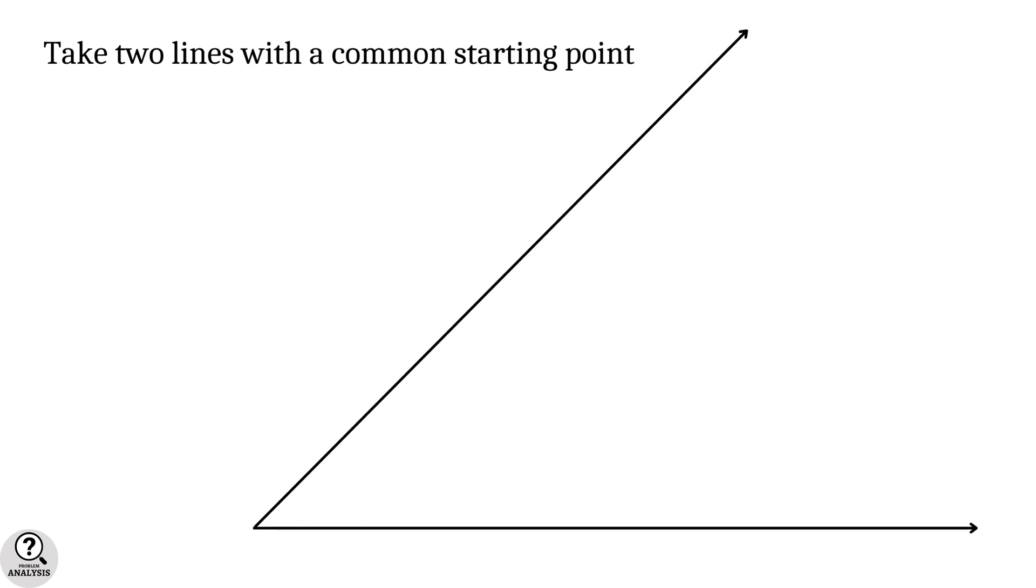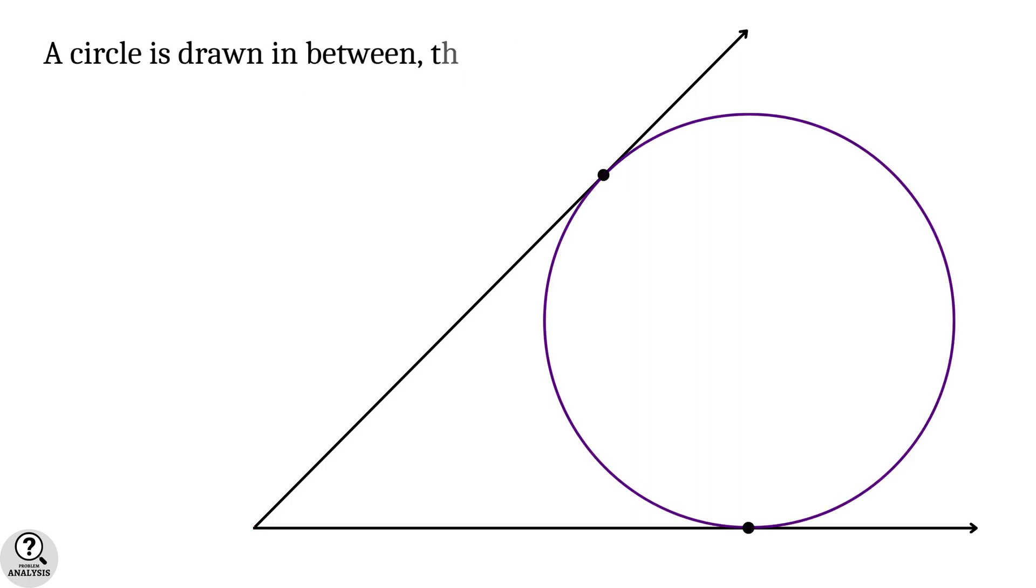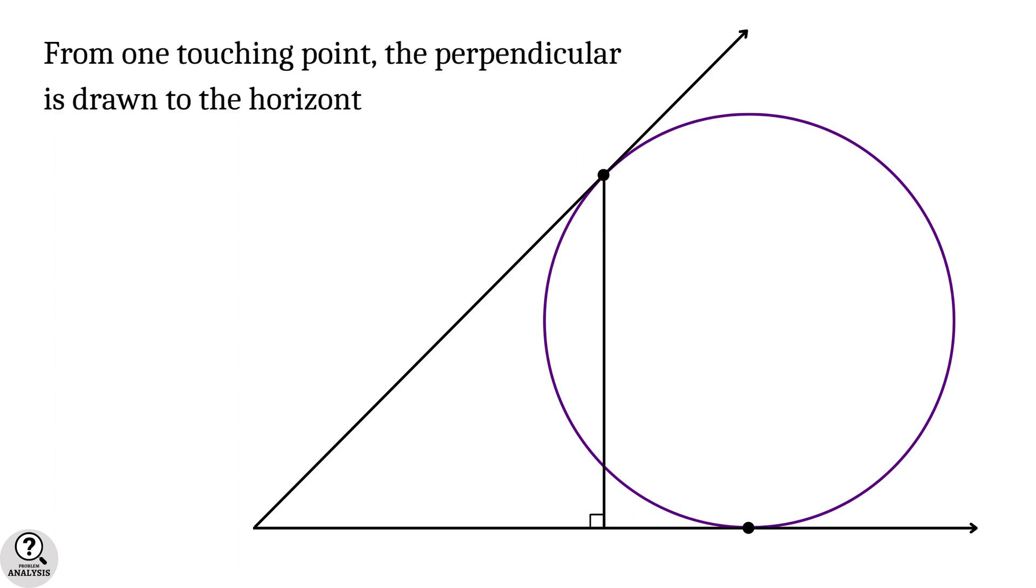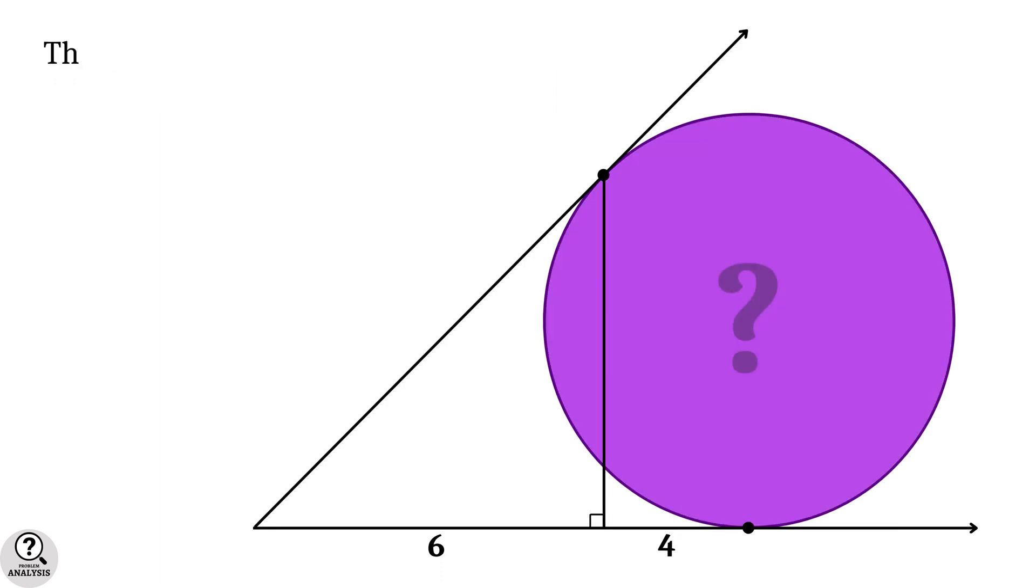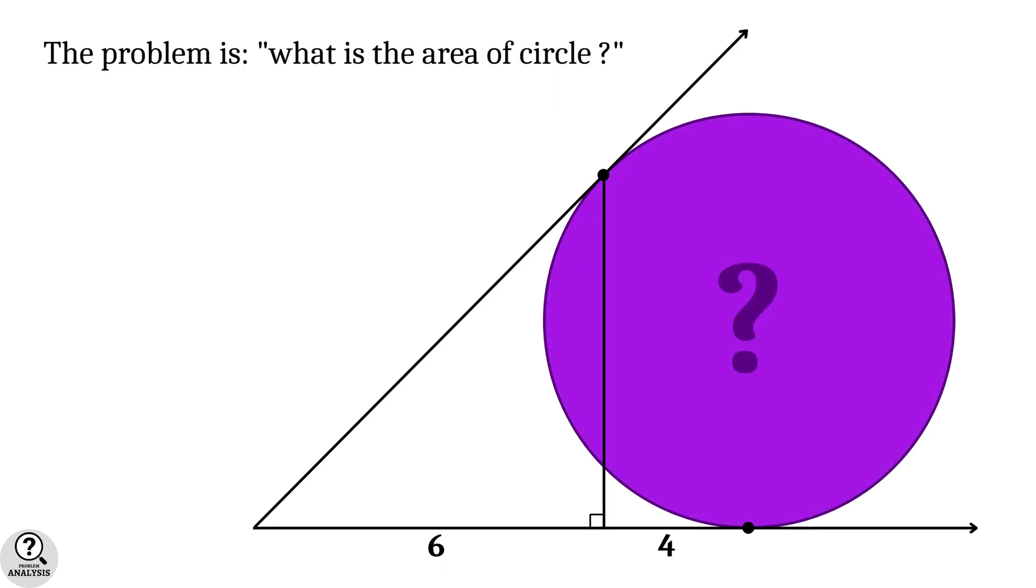Take two lines with a common starting point, and one of them is horizontally directed. A circle is drawn in between that touches both of these lines. From one touching point, the perpendicular is drawn to the horizontal tangent. Two parts of the horizontal tangent have lengths 6 and 4 units as shown in the picture. Then my problem is, what is the area of the circle?